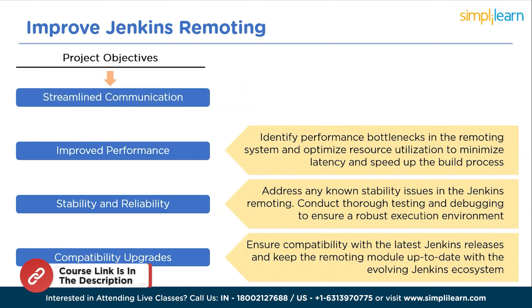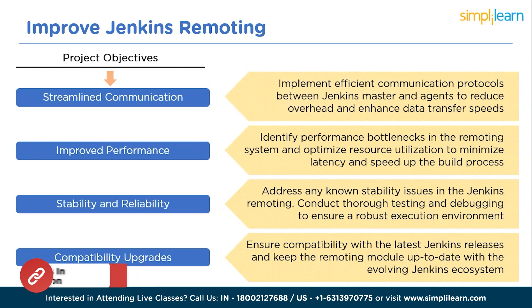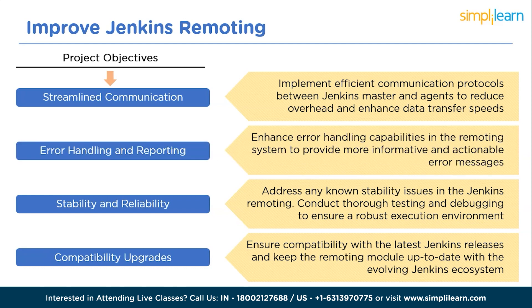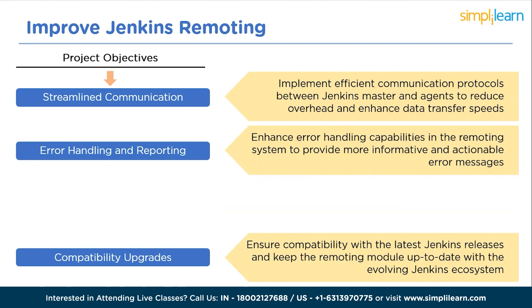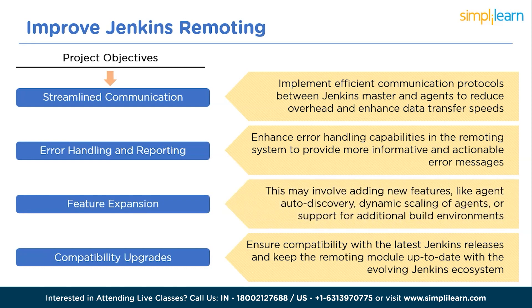The next objective is streamlined communication: implement efficient communication protocols between Jenkins master and agents to reduce overhead and enhance data transfer speeds, evaluating potential improvements such as binary serialization and optimized data exchange. Then we have error handling and reporting: enhance error handling capabilities to provide more informative and actionable error messages, assisting users in diagnosing and resolving issues. And the next is feature expansion: explore opportunities such as agent auto-discovery, dynamic scaling of agents, or support for additional build environments.